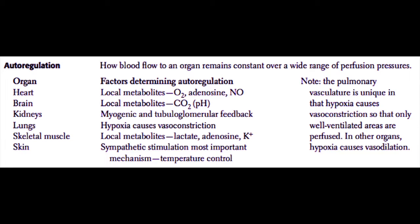Blood flow to an organ remains constant over a wide range of perfusion pressures. As mean arterial pressure goes up and down, the organ likes to maintain a certain blood flow — different organs have different abilities and ways by which they determine their autoregulation. For example, the heart's coronary circulation is generally determined by local metabolites such as oxygen, adenosine, and nitric oxide. Adenosine and nitric oxide cause vasodilation and an increase in coronary blood flow.